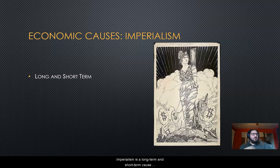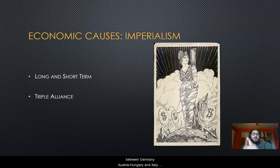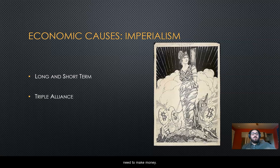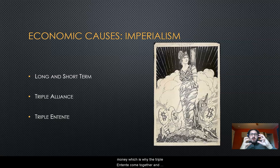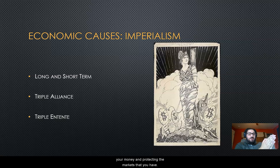Imperialism is a long-term and short-term cause because it is all focused on expansion — the more land and colonies you have, the more money you make. The Triple Alliance between Germany, Austria-Hungary, and Italy consists of countries all in the middle of Europe that are limited in how they can grow, meaning their economies are always going to be small and stunted. This pushes them toward imperialism and expansion to make money and grow their countries. Meanwhile, the Triple Entente comes together to protect each other's existing markets rather than seek new ones. Economically, one half of the war was about gaining money and growing, while the other half was about protecting the money and markets they already had.